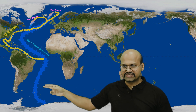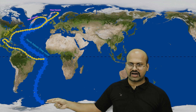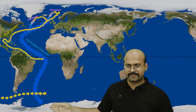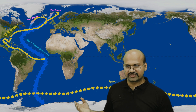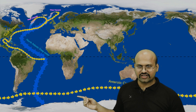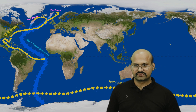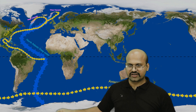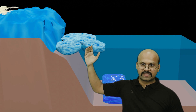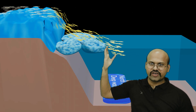The North Atlantic Deep Water reaches the Antarctic region after several hundred years. Here there is also an Antarctic Circumpolar Current flowing on the surface — yellow indicates surface currents, blue indicates deep water currents. When this deep water current reaches Antarctica, icebergs adjacent to Antarctica are pushed away from the coast by wind.